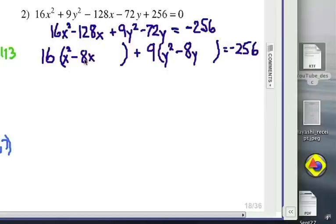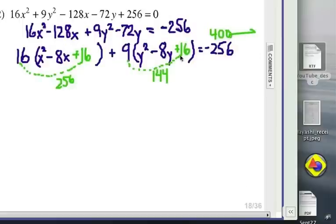The third term here must be half of negative 8 is negative 4. Square it to make 16. Half of negative 8 again is negative 4 and square it to make 16. Now it's a little bit tricky here, but take a look. 16 times 16 is what I actually added and 9 times 16 over here. That's 256 and 144 and so I add the total there which is actually 400 on the right. On the left I'm adding 400 and on the right I'm adding 400, keeping it balanced.